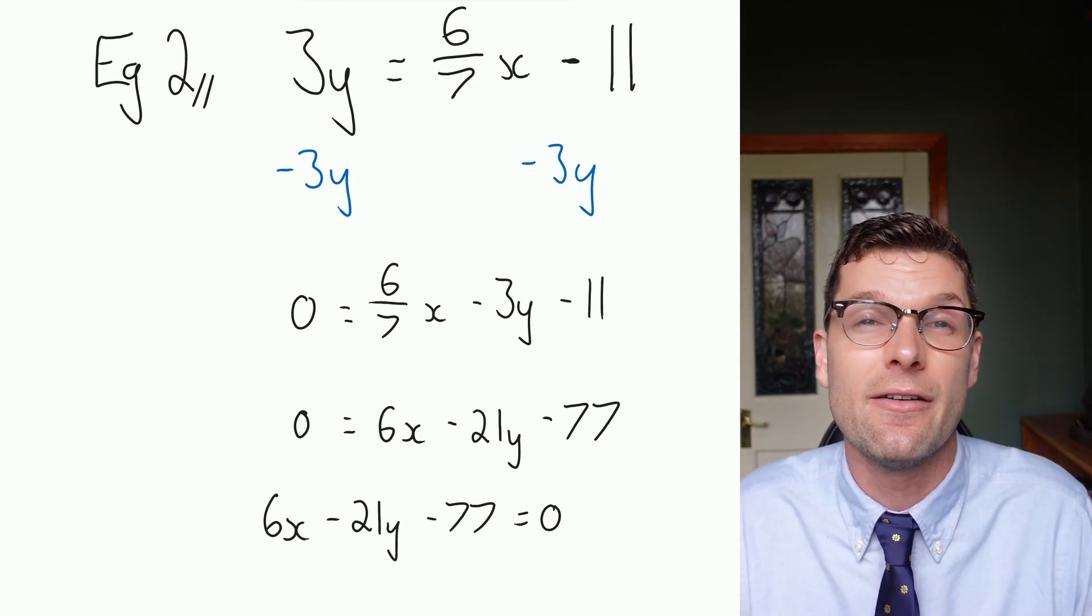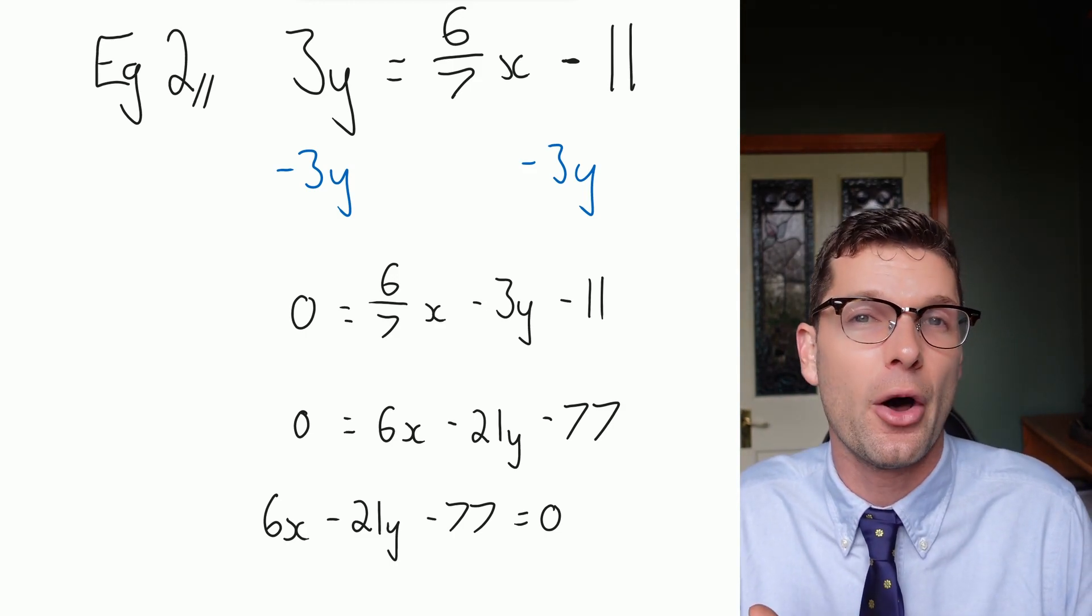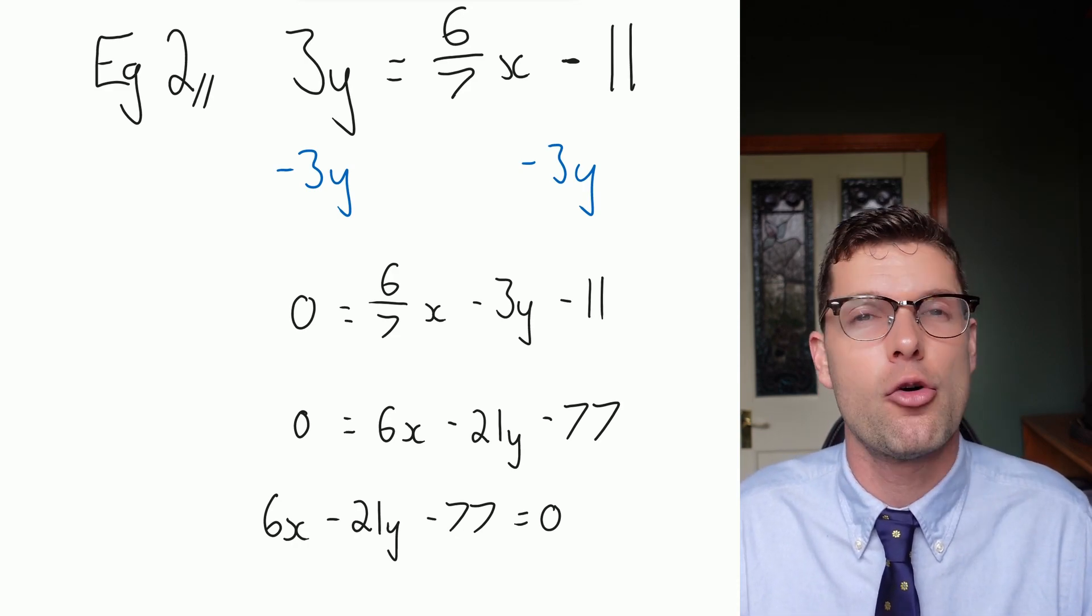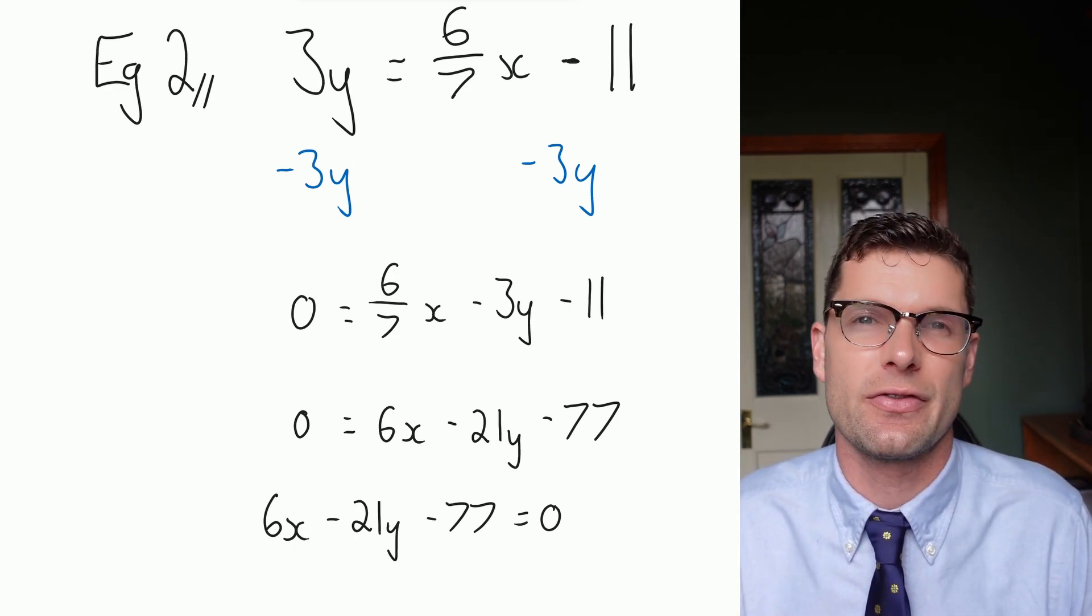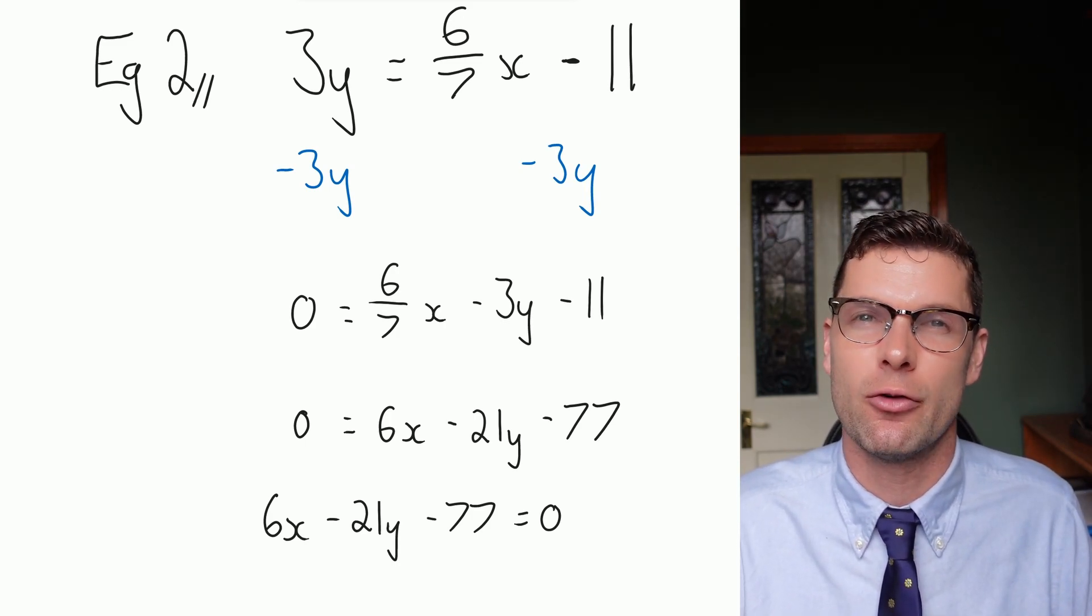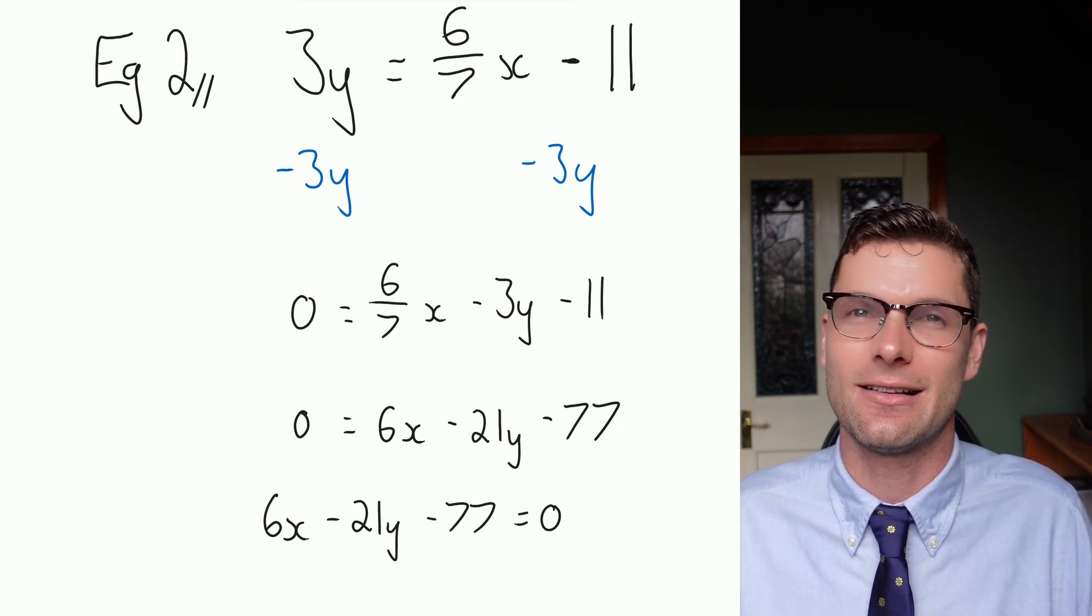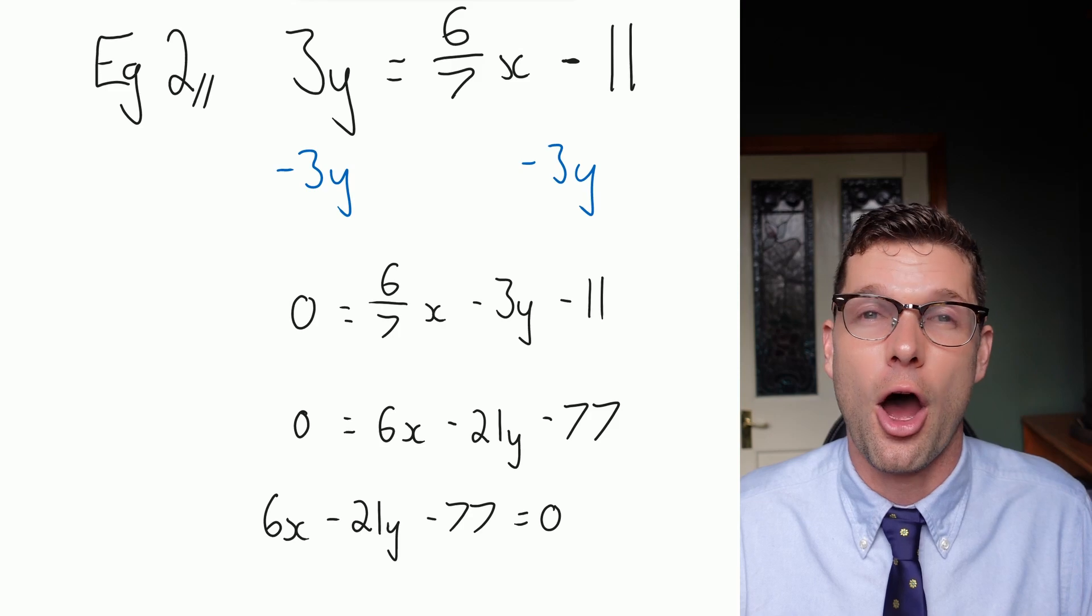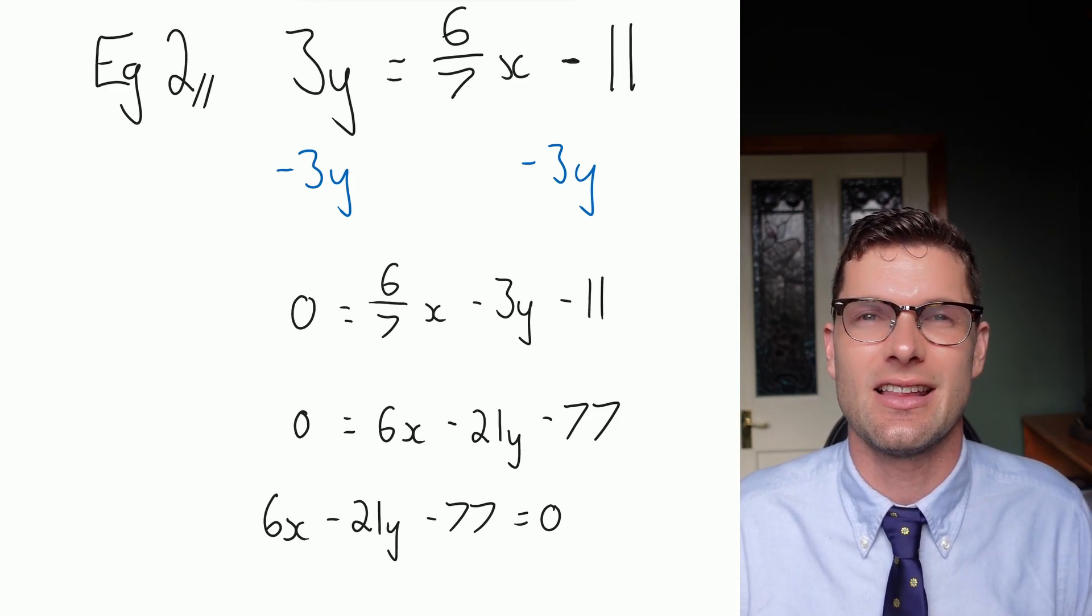This fulfills everything that I need. I've got a positive x term there. I've got zero on one side, and I've got whole numbers throughout. So I know I've got this right. So if you graph that first equation we were given in this example, and your answer in general form, the graphs are going to be exactly the same, because both of these equations give the exact same information. I hope you found this helpful, and I'll see you guys later.